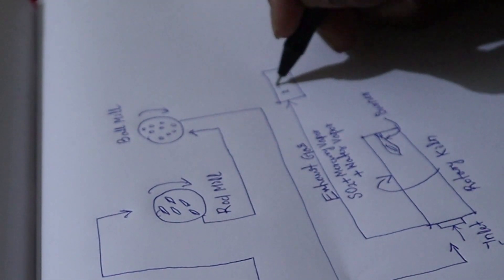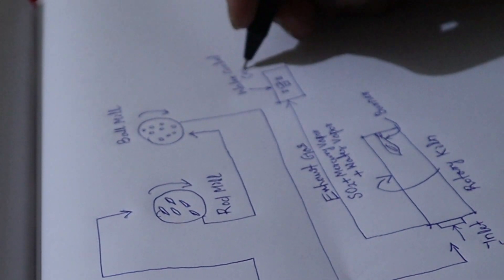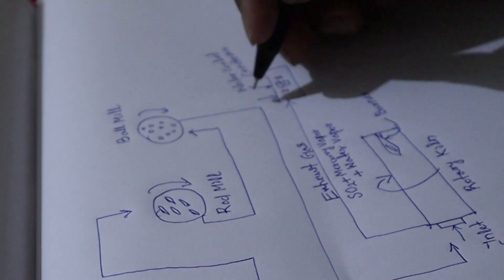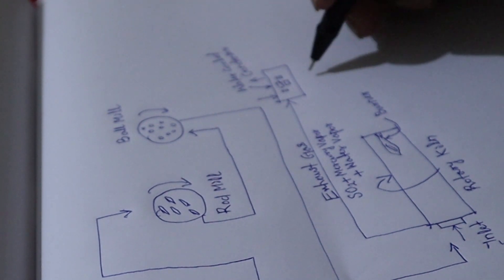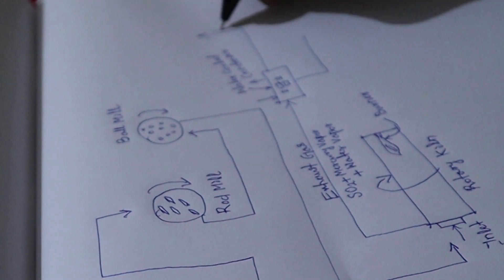The mixture of gases passes through a water-cooled condenser. Mercury, which has a boiling point of 357 degrees Celsius, is the first to condense into liquid, leaving the other gases to be vented out.